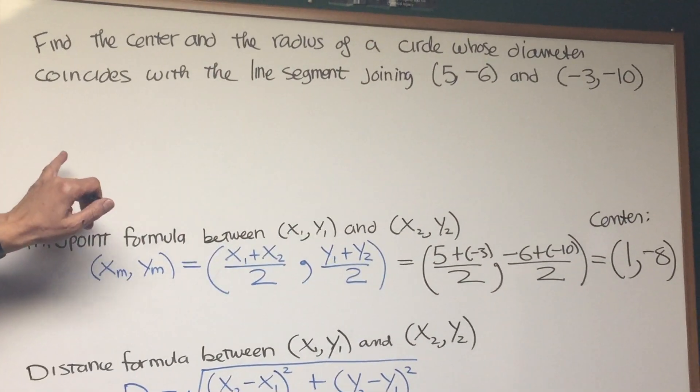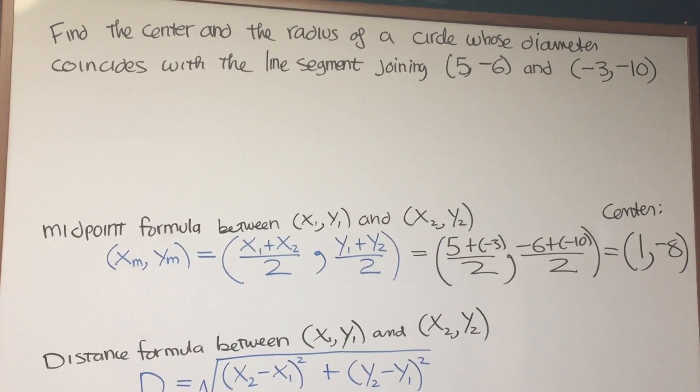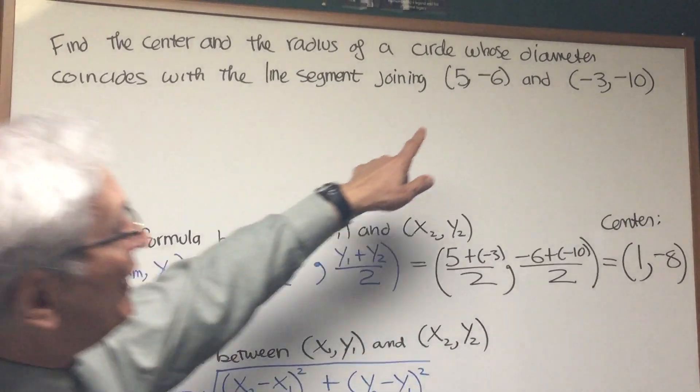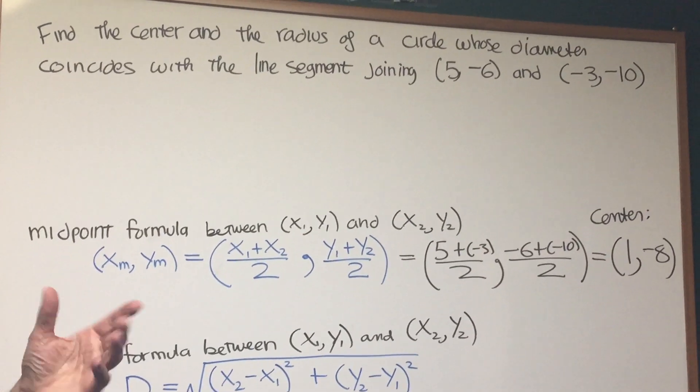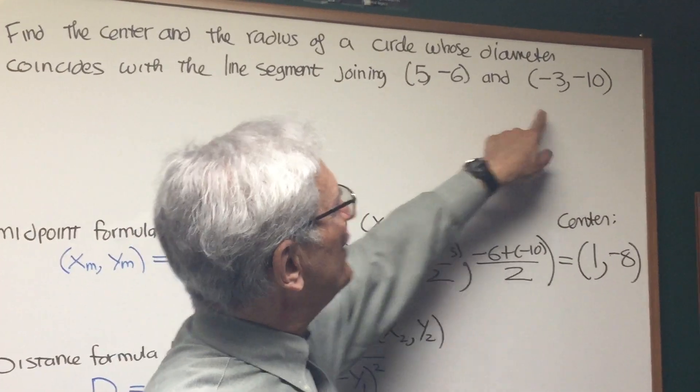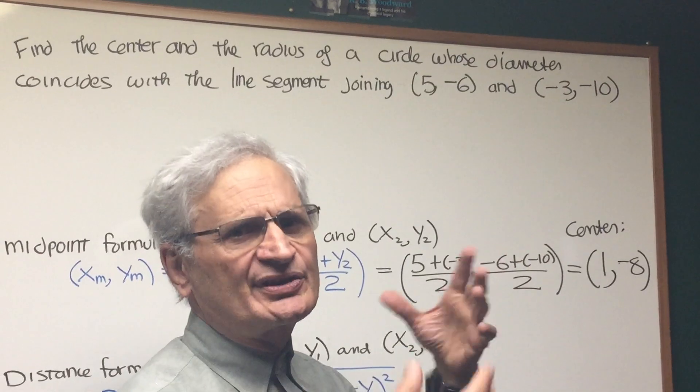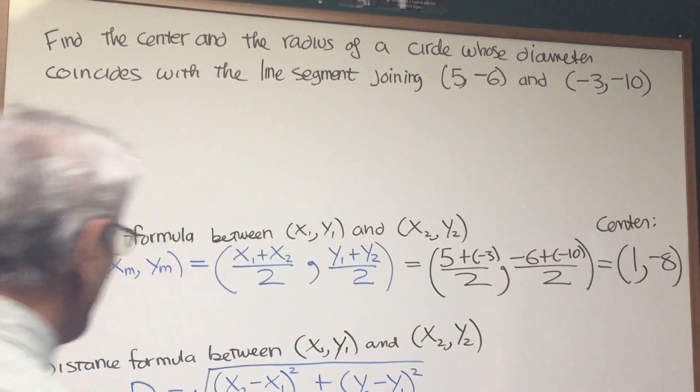Okay, now, what is the radius of this circle? Well, we know that these are the endpoints of the diameter. We know the diameter is twice the radius. So we have to find out what is the distance between these two endpoints. What is that distance will give us the diameter.